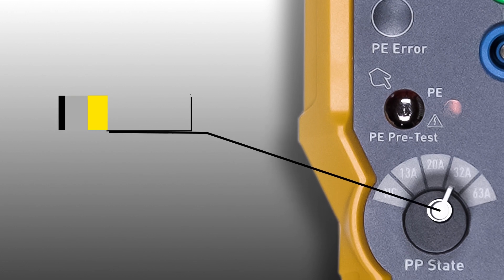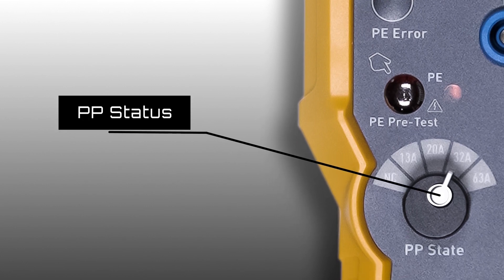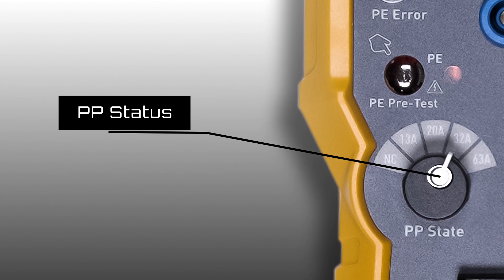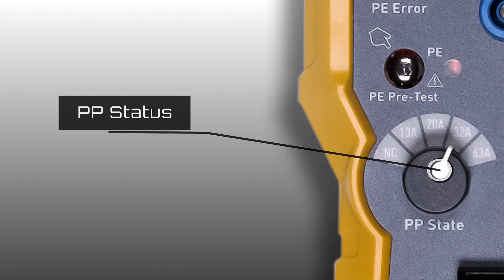A rotary dial to select the PP state of the charge point under test. Simply select the current setting as per the specification of the charge point.